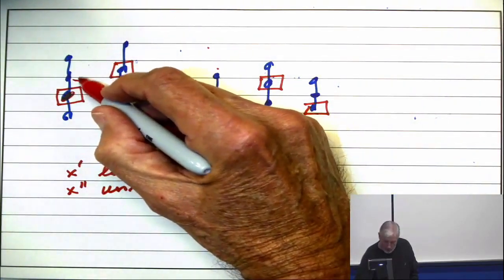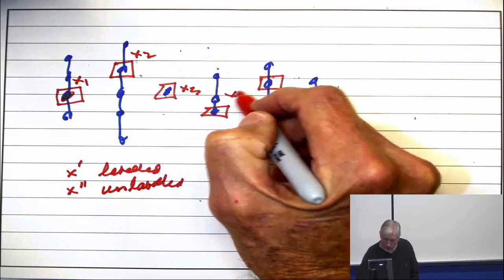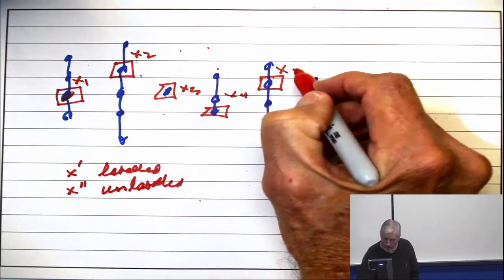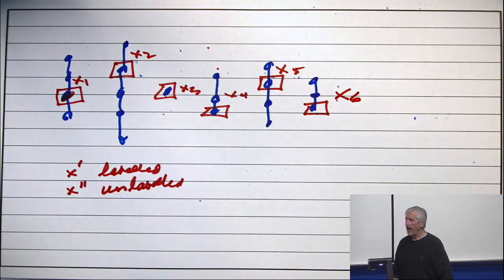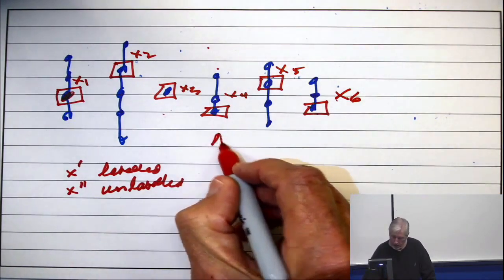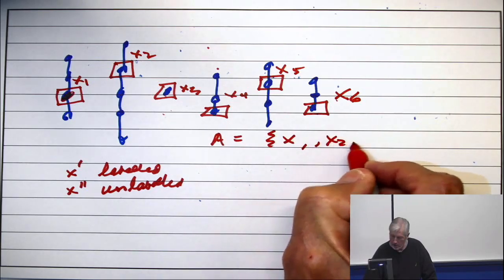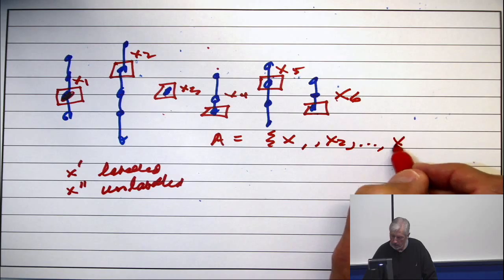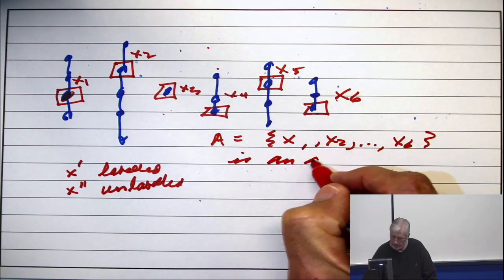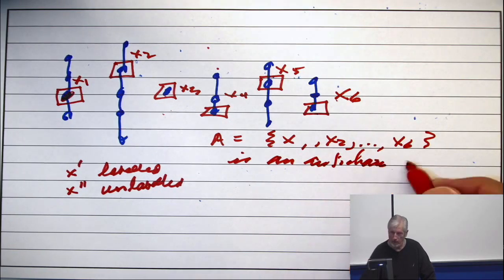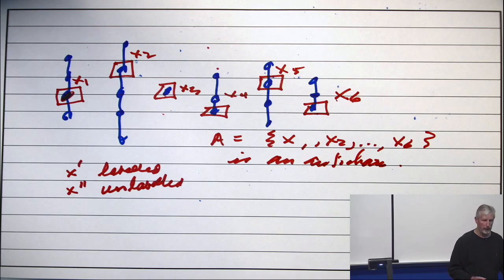Now, there's X1, there's X2, there's X3, X4, X5, and X6. And the claim is that this is an antichain. And now let's explain that.